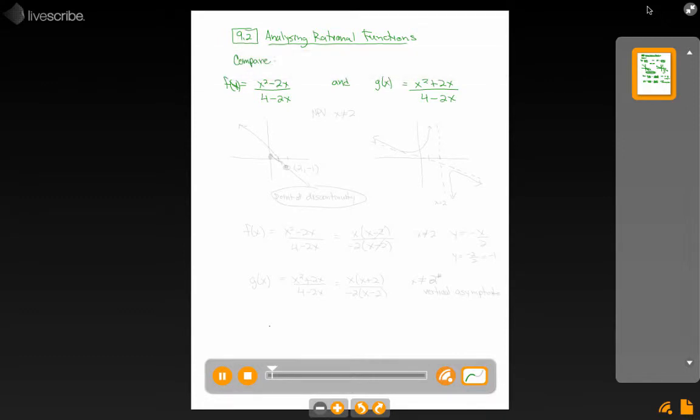This example is slightly different than our last two in that we're being asked to compare two functions here. We're going to graph two things, and not just one. And they sure do look an awful alike when you look at the functions themselves. x squared minus 2x over 4 minus 2x, or x squared plus 2x over 4 minus 2x, only changing one sign.